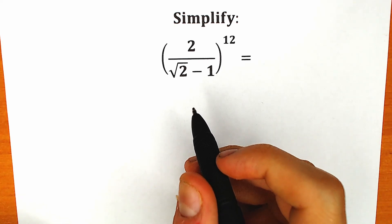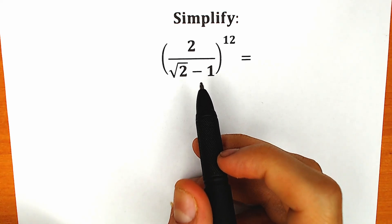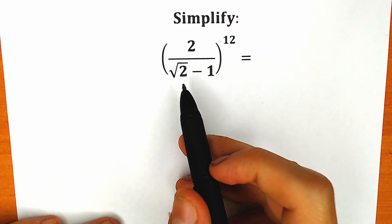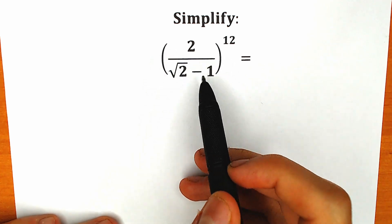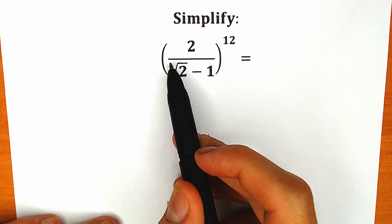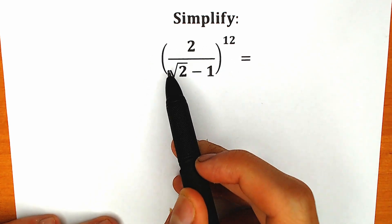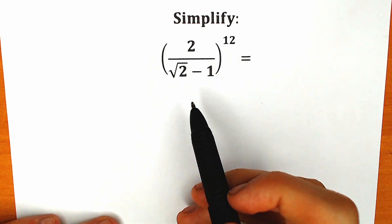Hello everyone, happy to see you here. Welcome back to my channel. I'm Mathematics. Today we have a very interesting question from Math Interview. We need to raise this expression: we have 2 in our numerator and square root of 2 minus 1 in our denominator. We need to raise this expression to the power 12.